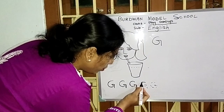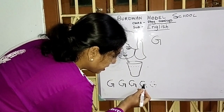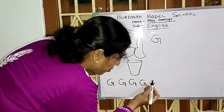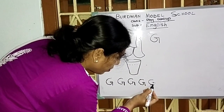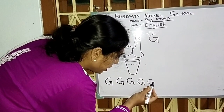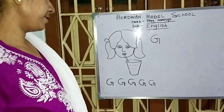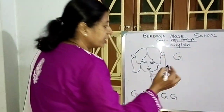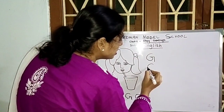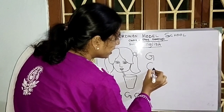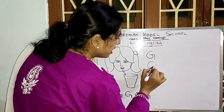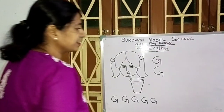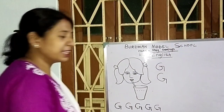I know, student, letter G is a little bit tough for writing. You are so little, that's why. But first write one C, then this is G.